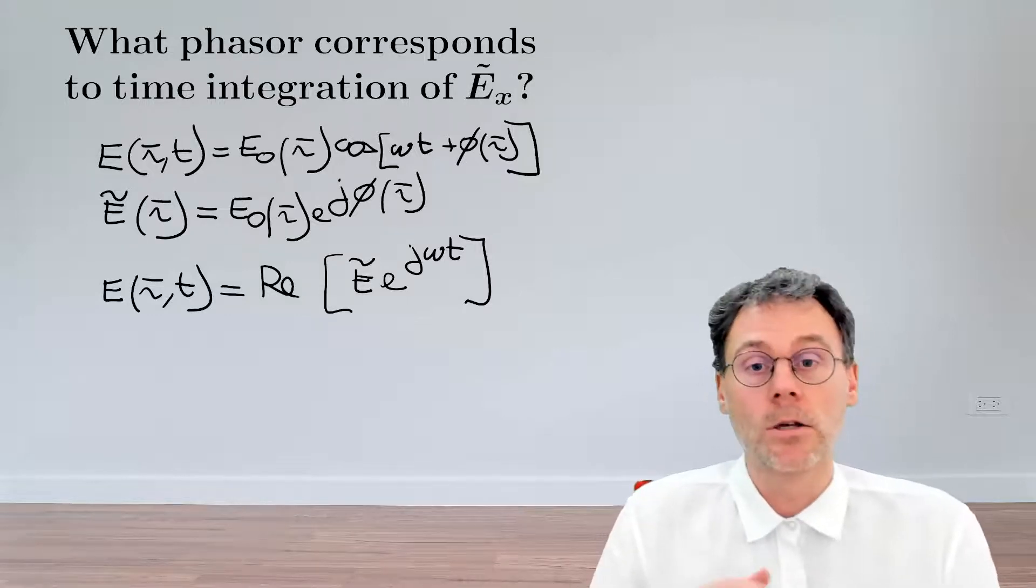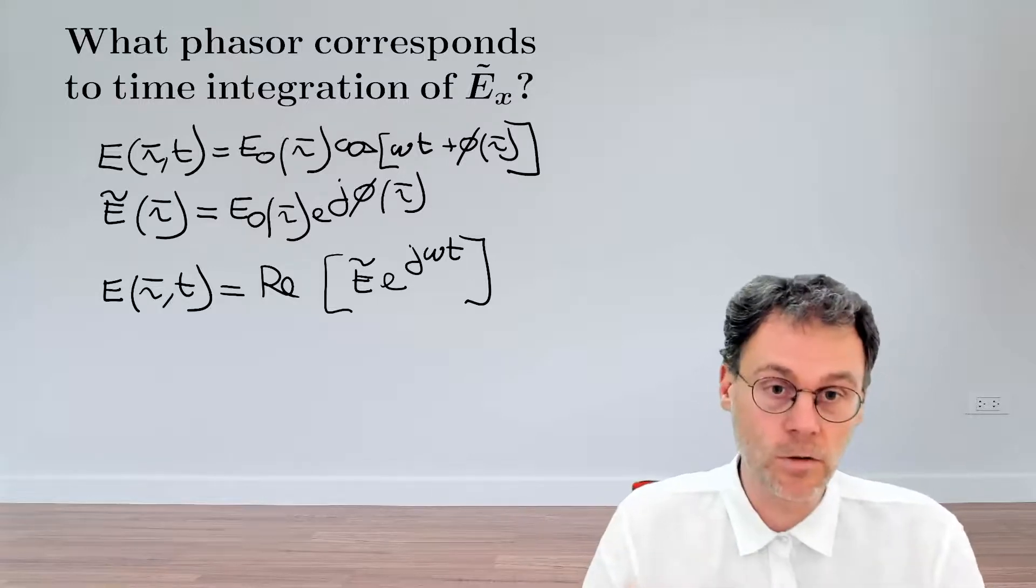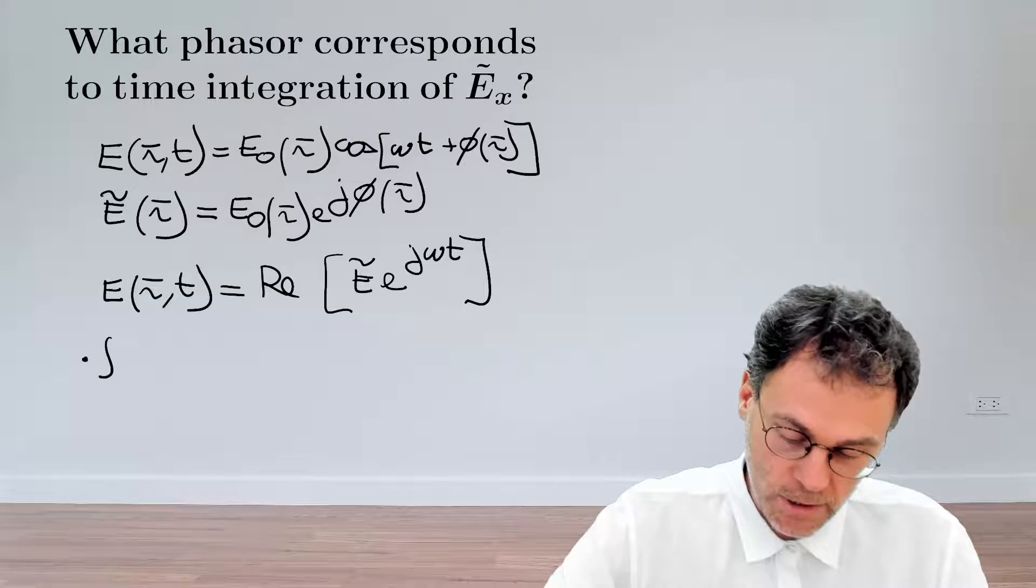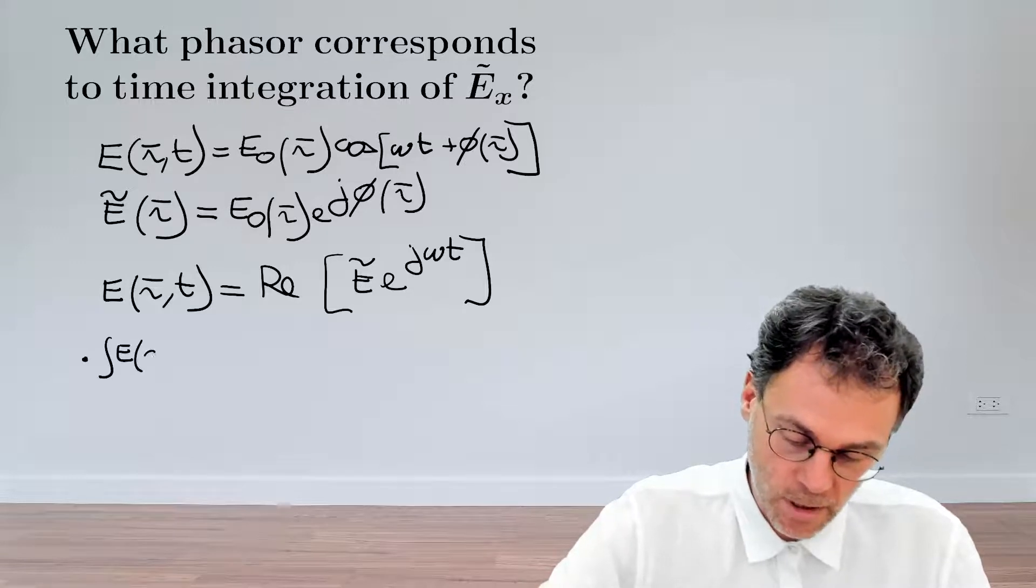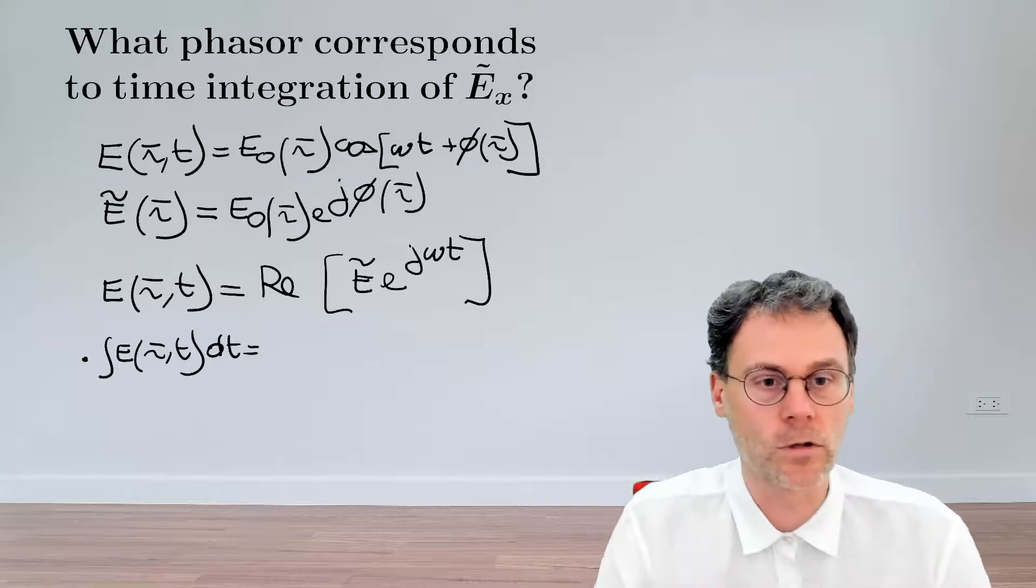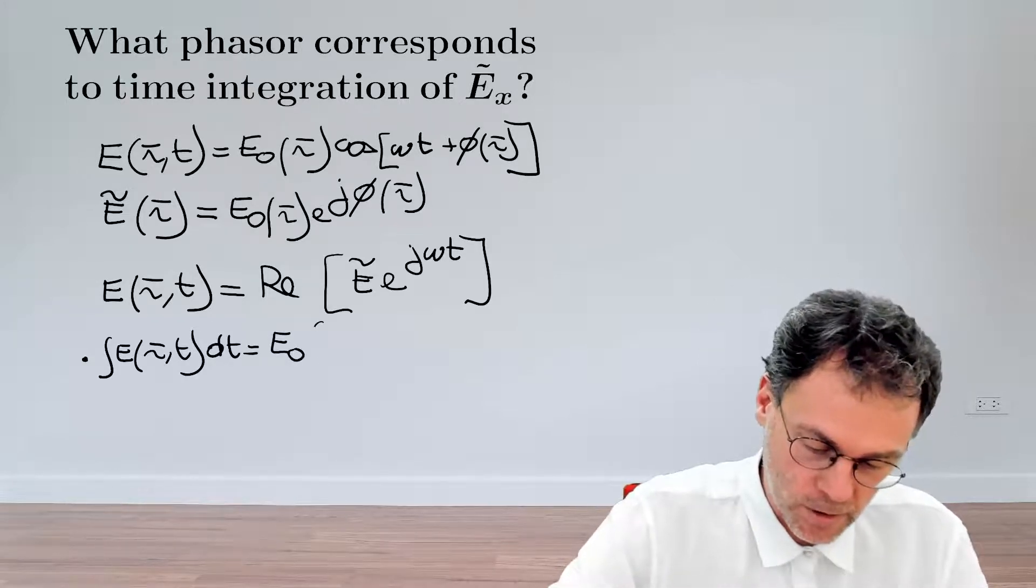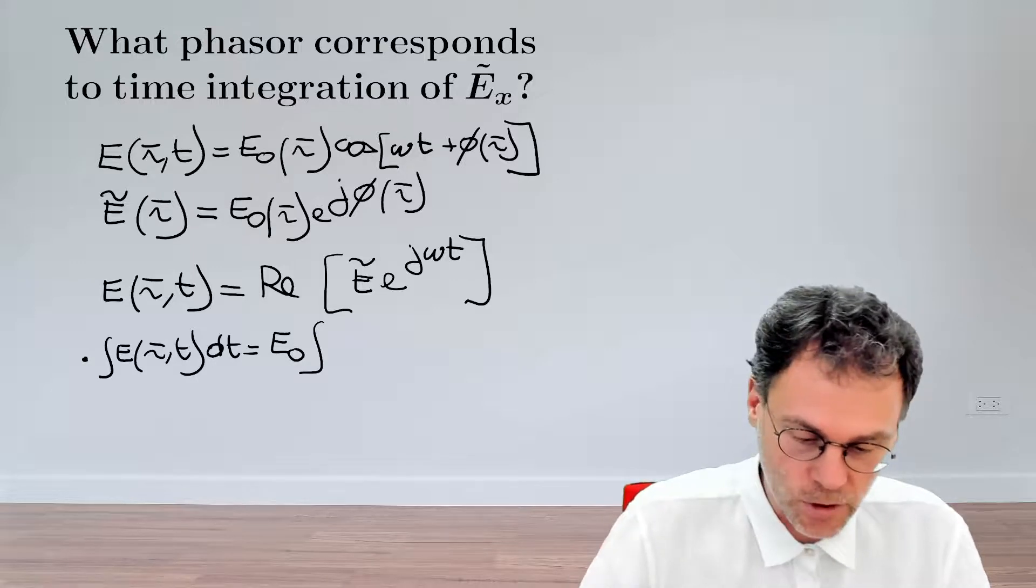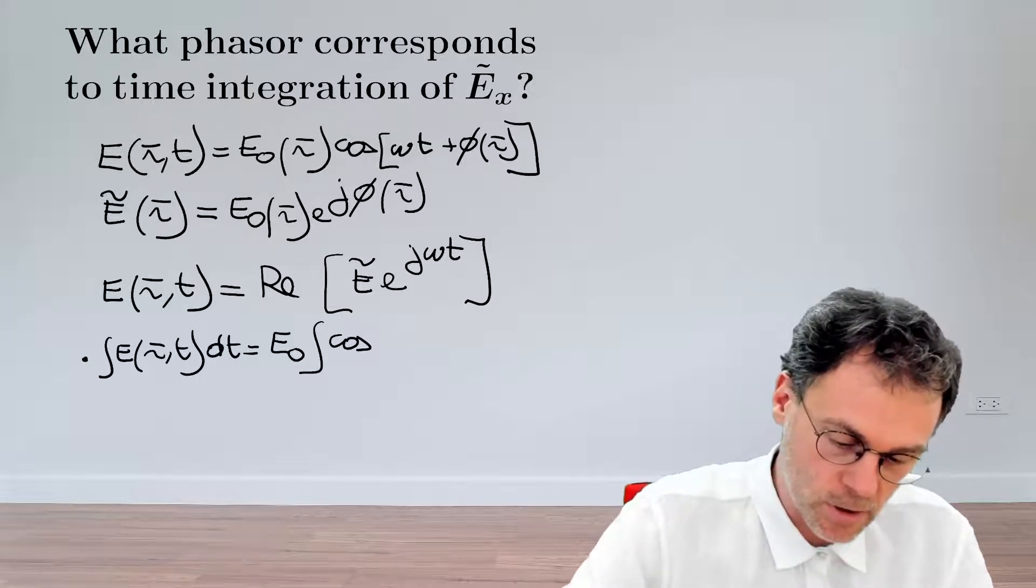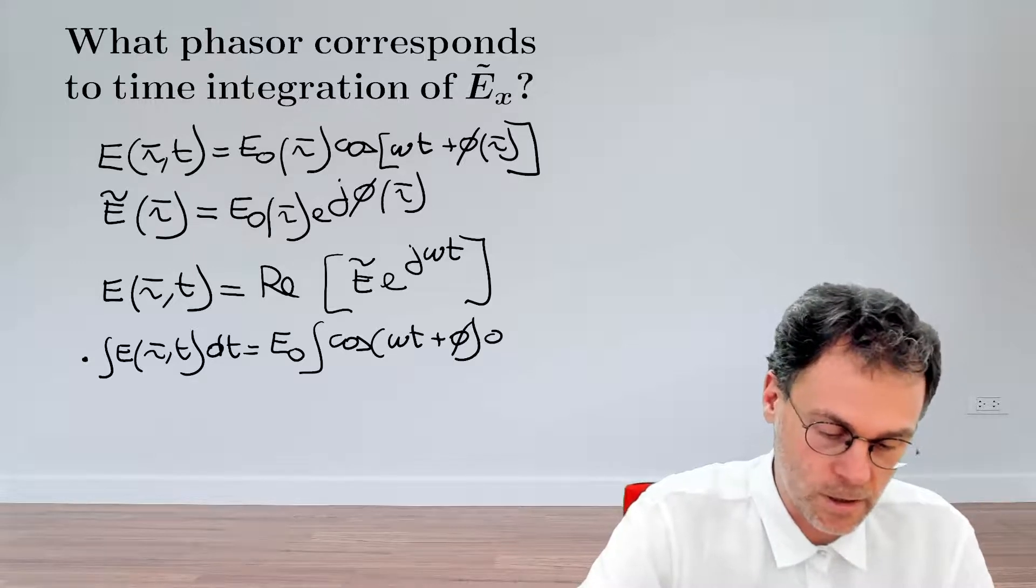Okay. So, let's have a look at the time integration of that oscillation. So, first of all, we need to calculate that. So, that's the integral of E(R,t) dt. That's, of course, a very straightforward integral. So, just filling in what E of t looks like. So, that's going to be cosine(ω t + φ) dt.